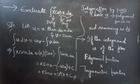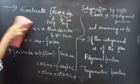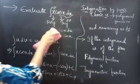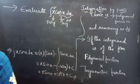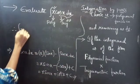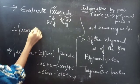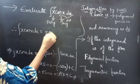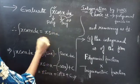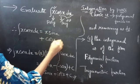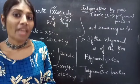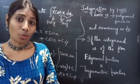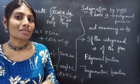So we have used integration by parts to evaluate the given integral. Therefore, integral x cos x dx equals to x sin x plus cos x plus c. This completes the problem. We have seen a problem from integration. Hope you will understand. We will see in the next video. Until then, bye-bye.